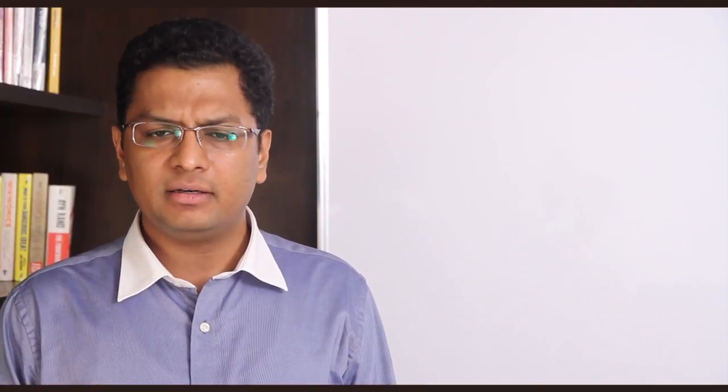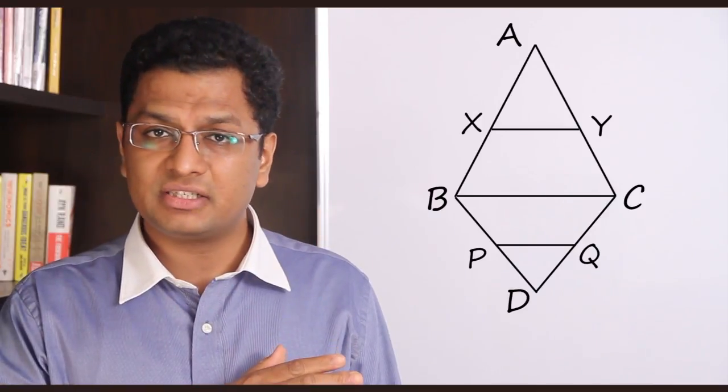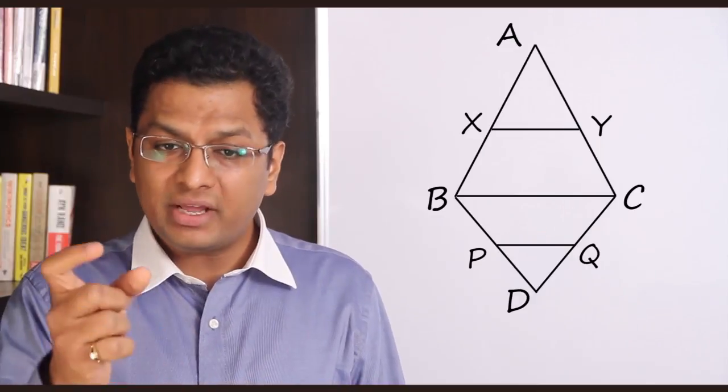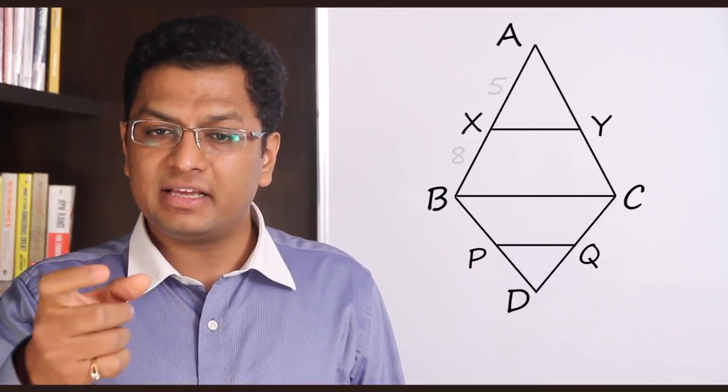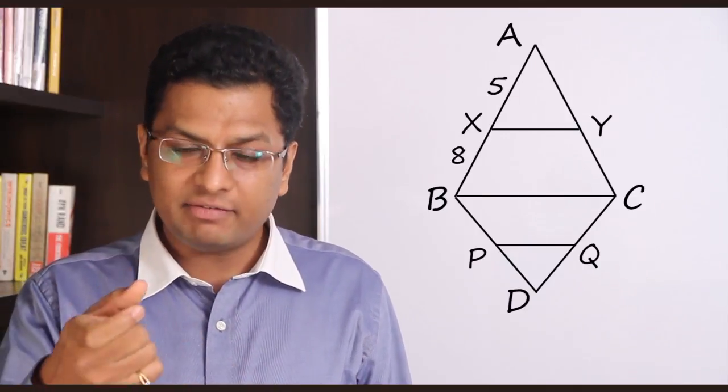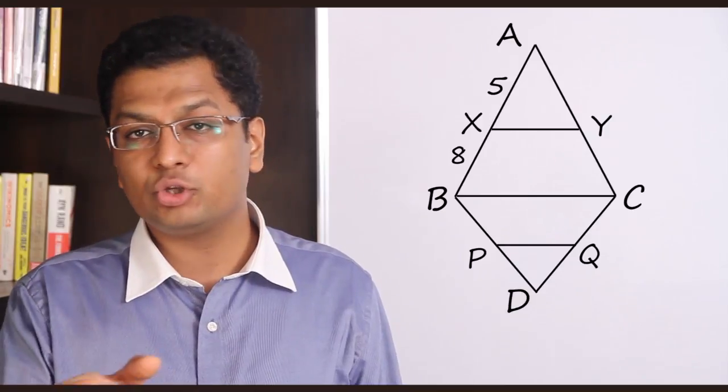Let us have a look at triangle ABC. Triangle ABC has XY parallel, so XY upon BC should be equal to AX upon AB. We know AX upon XB. If AX upon XB is 5 upon 8, AX upon AB will be 5 upon 13, sum of the two. Similarly, XY upon BC will also be 5 upon 13.